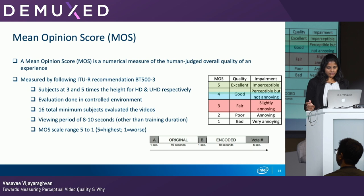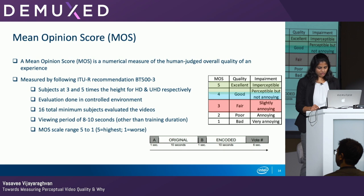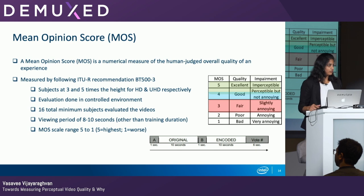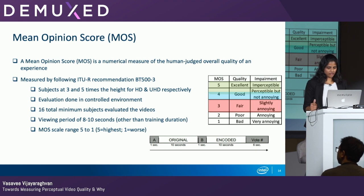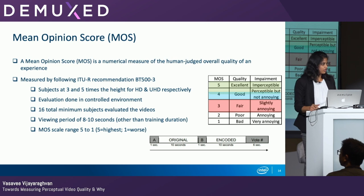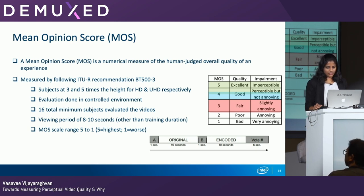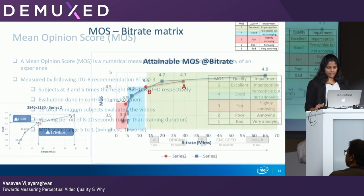Mean opinion score, or MOS, is the score I'm using to measure human-judged video quality. The best rating given in this experiment is 5, going all the way down to 1. I've color-coded this because I use it in the graphs in the coming slides. The experiments were carried out under controlled conditions in ITU-R recommended settings, and a minimum of 16 subjects evaluated all of the videos I'm showing data points for.